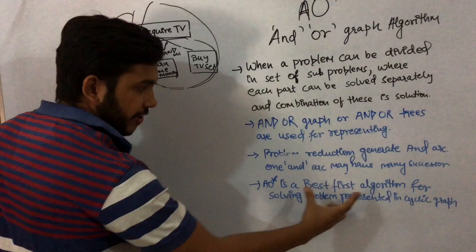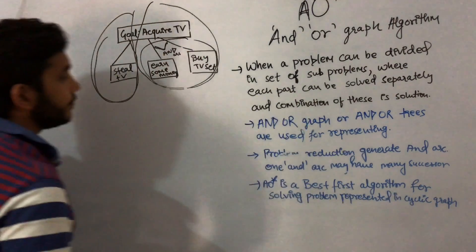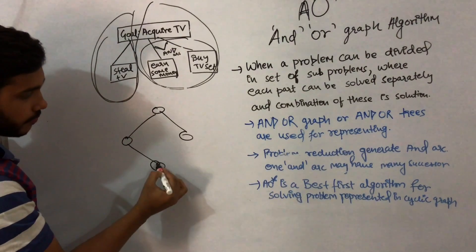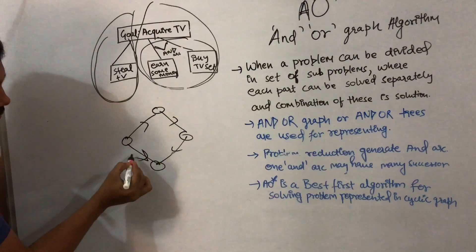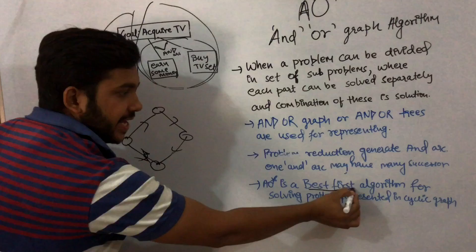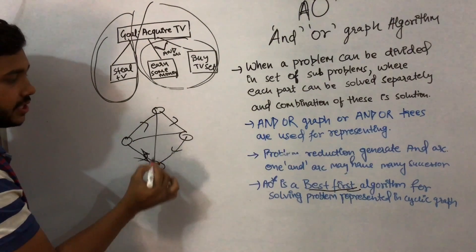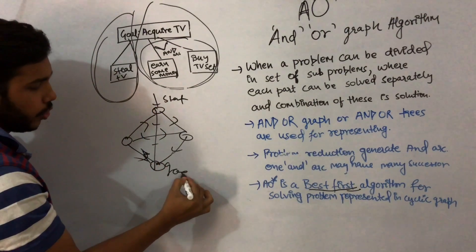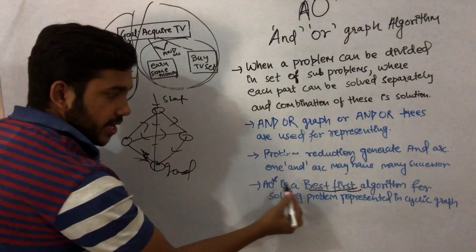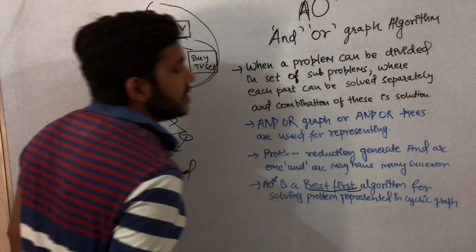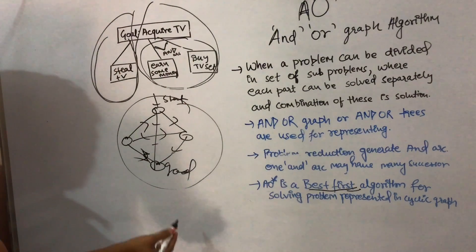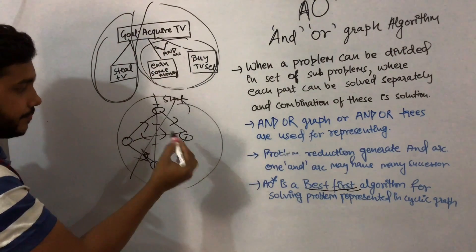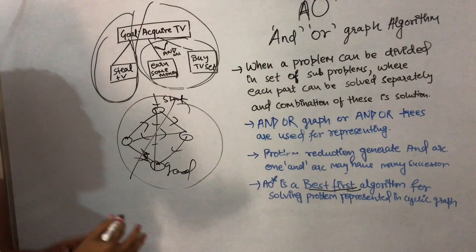AO* is a best-first algorithm for solving problems represented in a cyclic graph. When there is a graph in the form of a cycle, AO* finds the best path from the start node to the goal node. We can break the problem into sub-parts, combine them using AND arcs, and solve using the AO* graph algorithm.